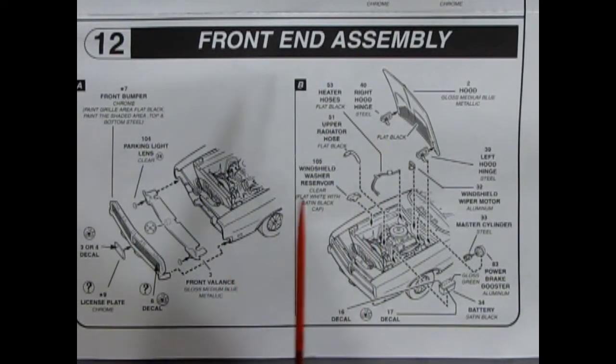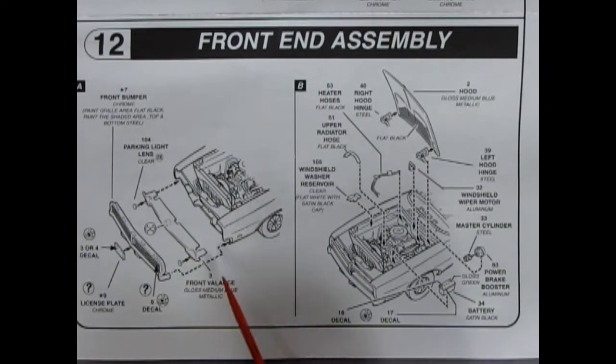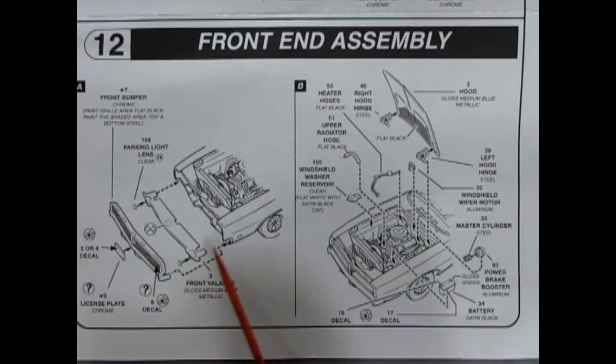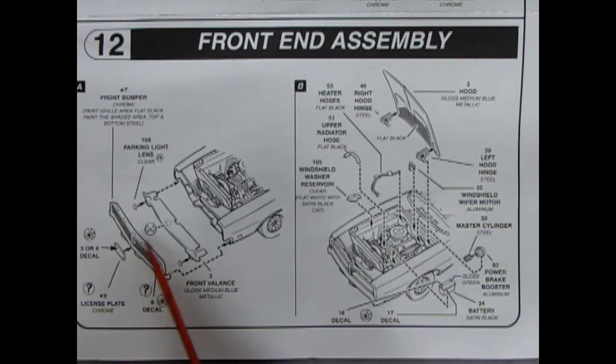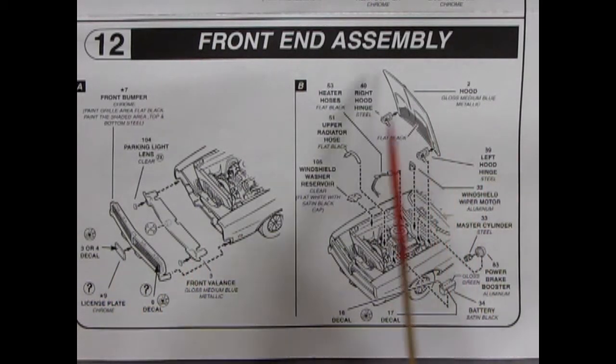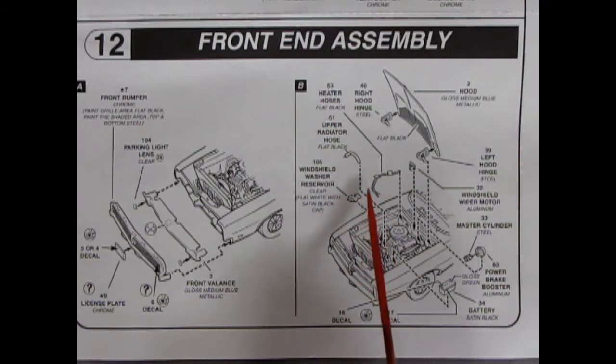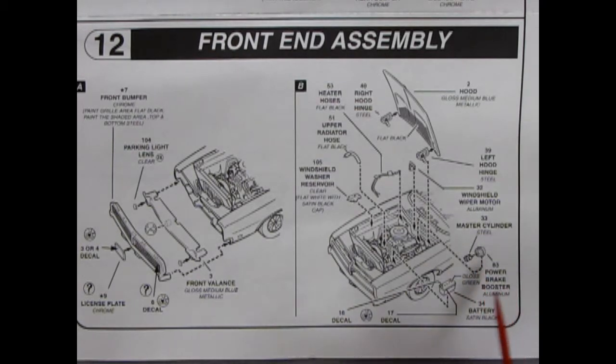Panel 12 takes us to our front end assembly and here you get your front valence going underneath as well as your grille going in there and then the license plate with your choice of license plate decals. Then we've got our hood with the hood hinges, all the little hoses for the heater and radiator and windshield wiper reservoirs going in as well. Power brake boosters, batteries, the whole deal pops underneath your hood.